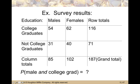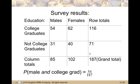The probability that someone is male and a college graduate: there are 54 people who meet that condition. To get the probability, divide by the total number of people, so 54 out of 187 is our probability.